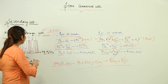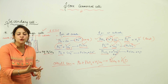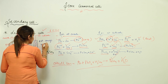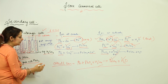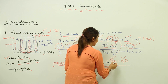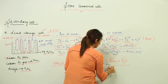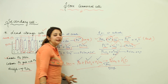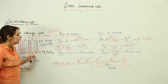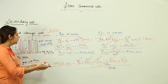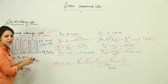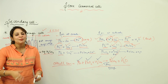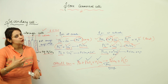At this point, recharging is needed. We supply external energy of sufficient voltage to reverse the electrode reactions. During recharging, Pb is reformed at the anode, PbO₂ is reformed at the cathode, and H₂SO₄ is regenerated in the solution. The cell is then ready to discharge again, and this cycle — discharge, then recharge — can repeat indefinitely.